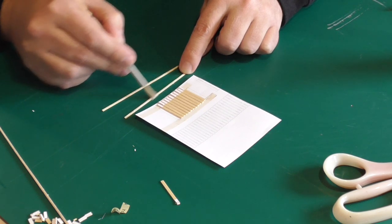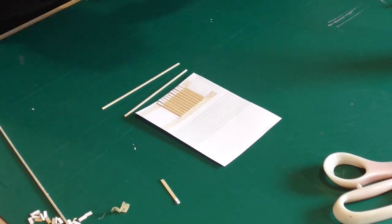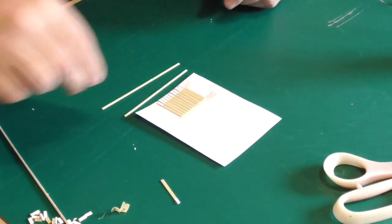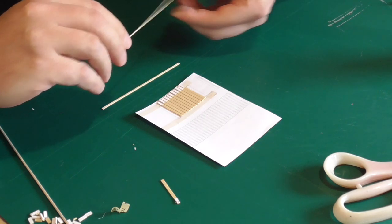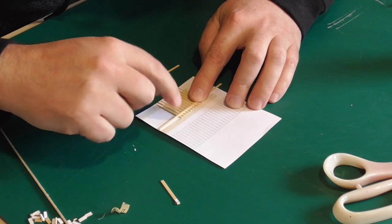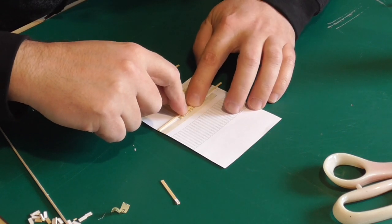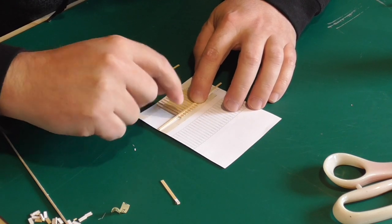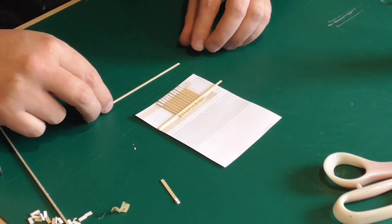You don't really want big globs of glue because if that seeps down in between the fence palings, you might end up finding that your fence gets stuck to the paper template. So we'll just spread that out a bit.